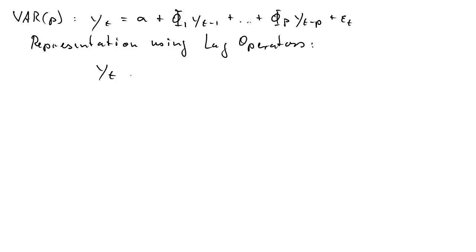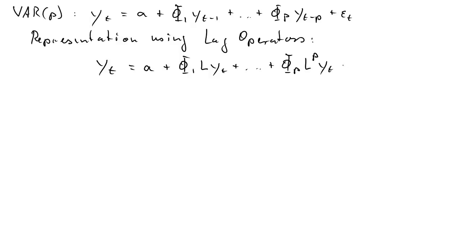Here's our VAR(P) process. It will turn out to be extremely useful to represent this with lag operators — we've done that for univariate processes as well. We basically just replace yt-1 by L*yt and yt-p by L^p * yt. That's just the application of the lag operator. We should recognize that in front of yt on the left-hand side we have an identity matrix, which for a two-dimensional process would look like the 2-by-2 identity.